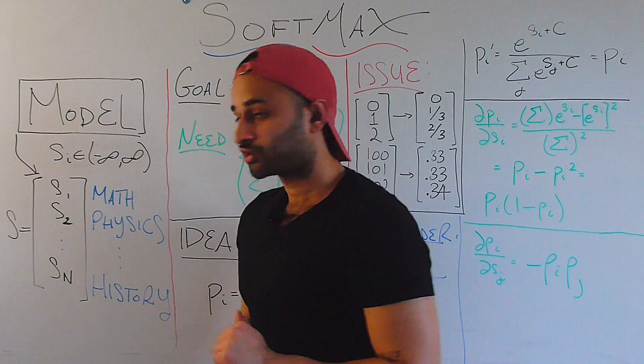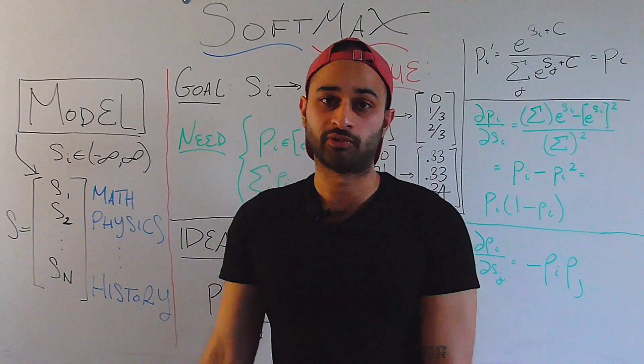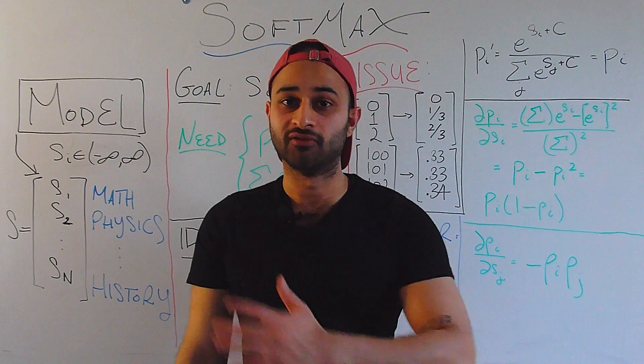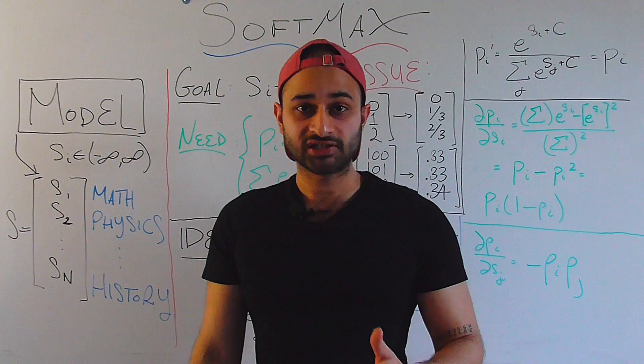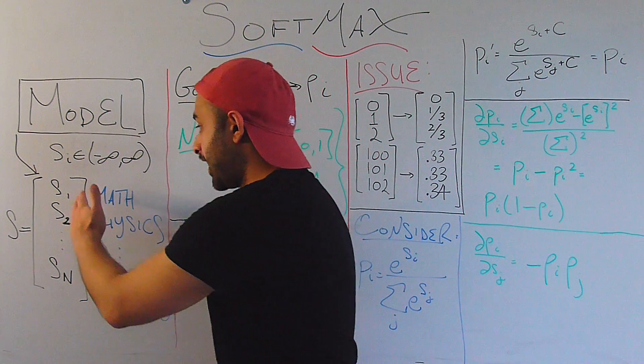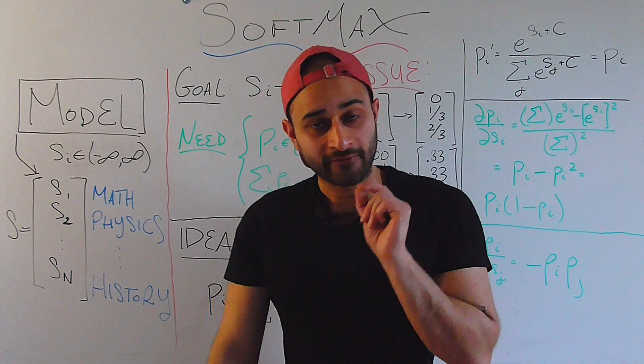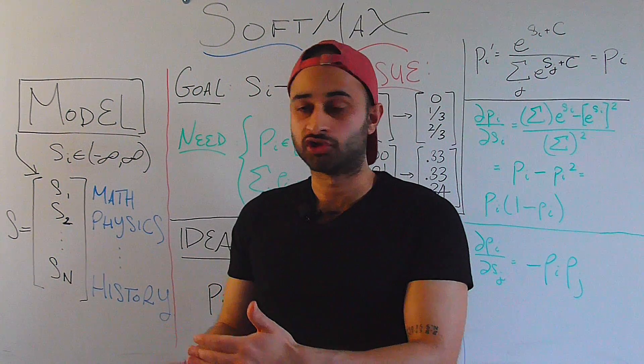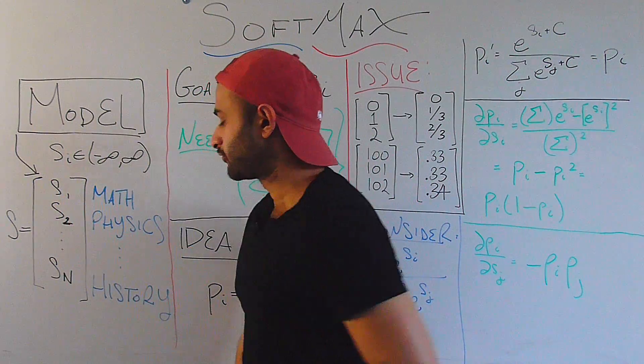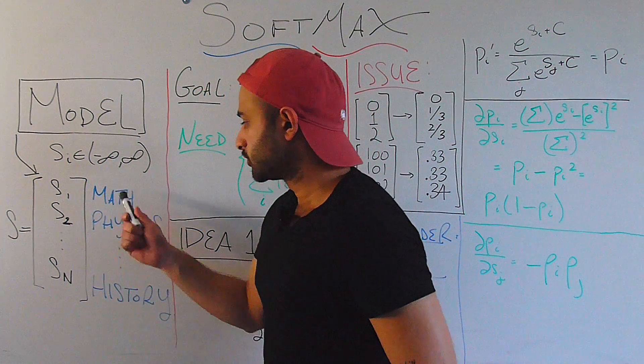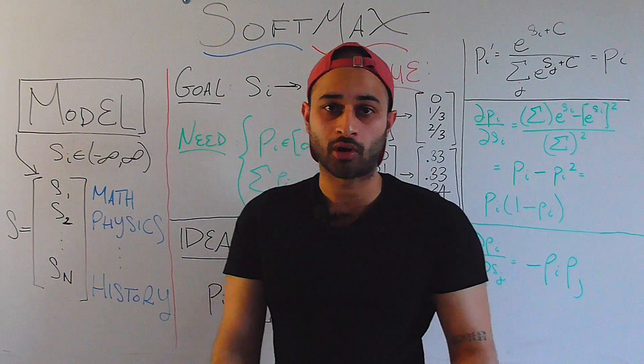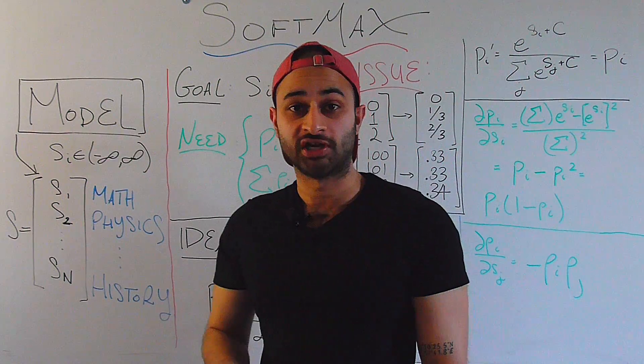And each of these si scores is unbounded. It's a real number between negative infinity and infinity. But what we can say about these scores is that the higher a score is, the more evidence we have that this high schooler is going to choose the corresponding major. For example, if one corresponds to math, two to physics, and so on, and perhaps n corresponds to history.